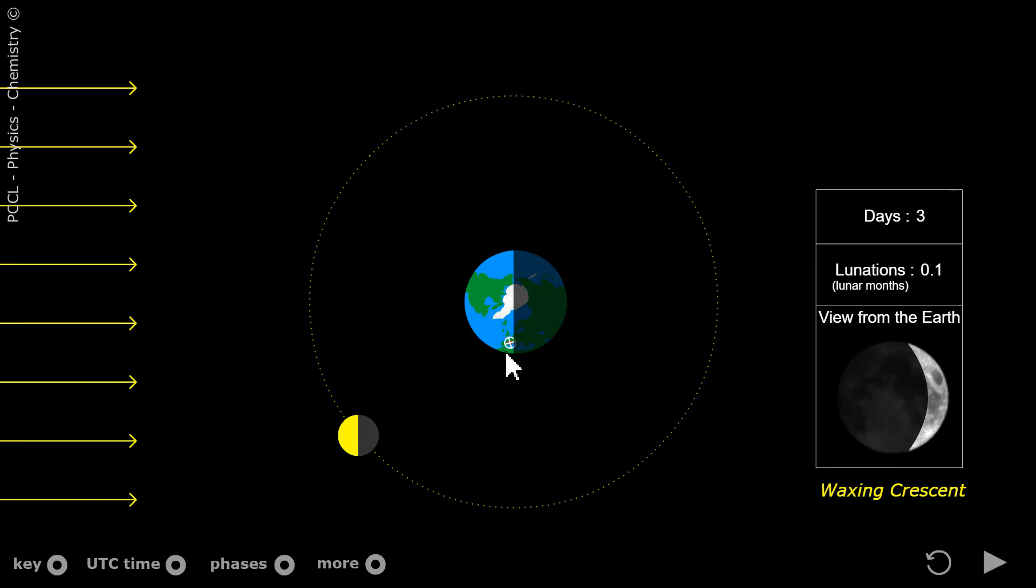Effectively, suppose we are here where the cross is, and suppose we are looking towards the moon. We would see the lit part of the moon to its right. So that's what we have here - the illuminated part is on the right. This shape is visible at 6 p.m. in the late afternoon, and possibly here at the very beginning of the night.